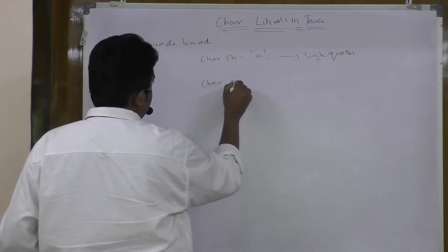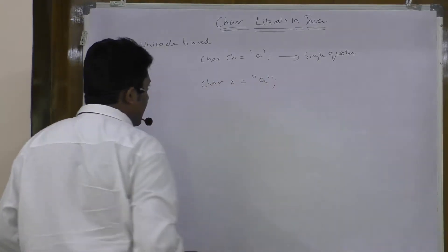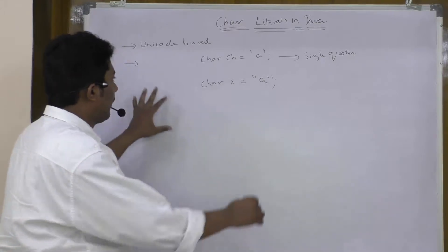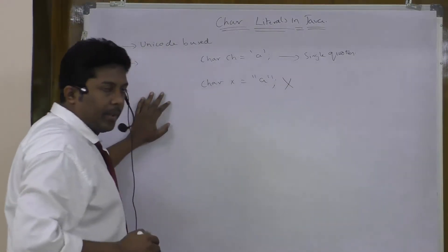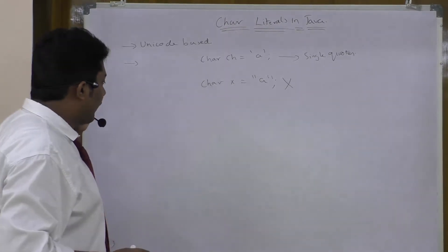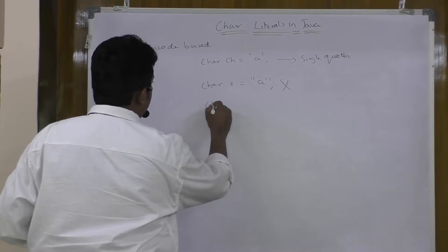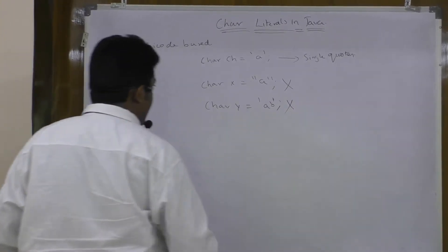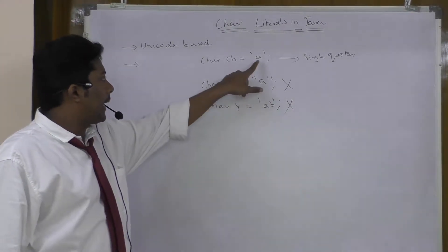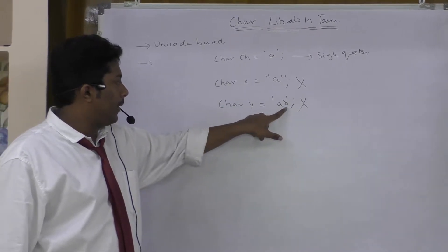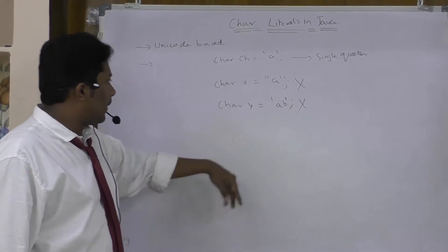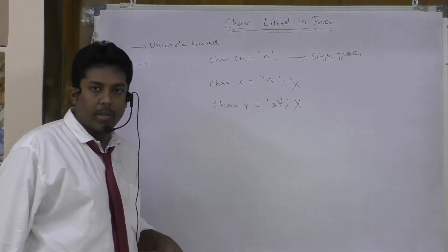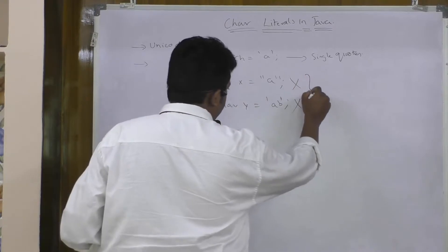If you say something like char x = "a" within double quotes, even though there is only a single value, single quotes only are allowed. Giving double quotes is a compile time error because it is treated as a String and a character variable cannot hold String data. Similarly, if you give multiple characters like char ab within single quotes, that is also not allowed. Only one character enclosed within single quotes is valid — both multiple characters and double quotes are compile time errors.